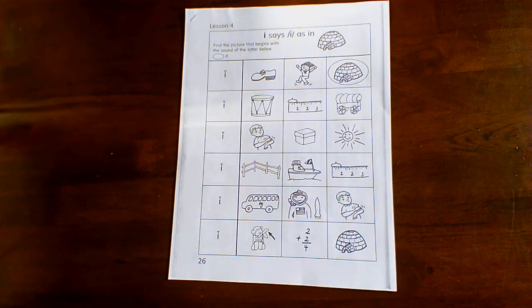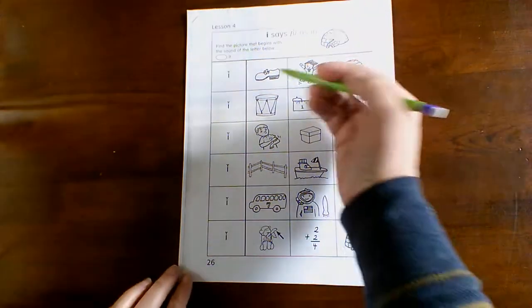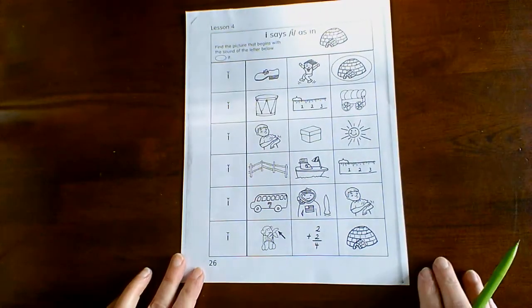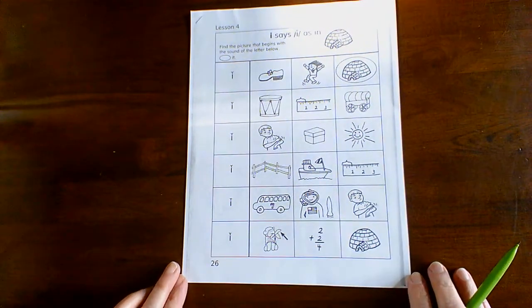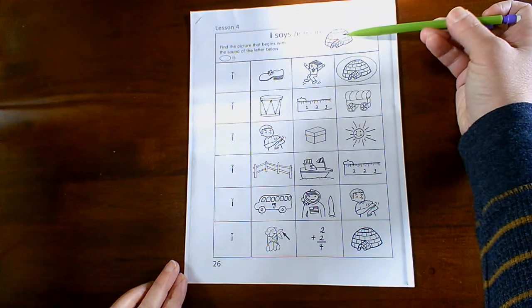Hello. We are working on the baby I sound this week. Baby I says I, I, I, and it's like the word igloo. I, I, igloo.